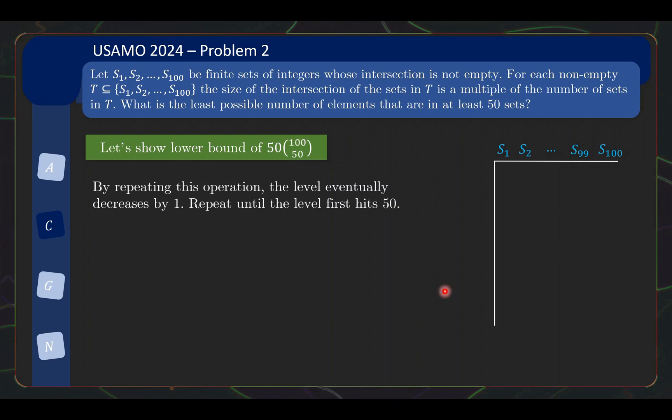But once we convince ourselves that the second sentence remains true, then it's just a matter of now repeating this operation over and over again. Each time you repeat an operation, you lose common elements that belong to k sets. Eventually, you will no longer have collection of k sets with common elements, then the level will drop from k, maybe it becomes k-1, maybe you might even skip past k-1. But eventually, you can repeat this until the level first hits 50 or below.